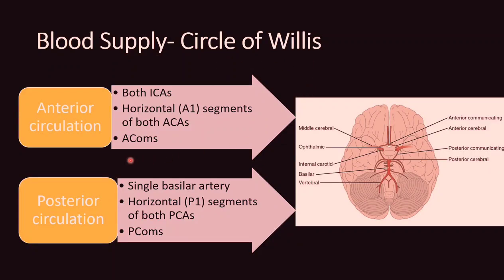The circle of Willis includes the anterior circulation and the posterior circulation. The anterior circulation is formed by both the internal carotid arteries, the horizontal segment of the anterior cerebral artery, and the anterior communicating artery. The posterior circulation includes both the vertebral arteries which join to form the single basilar artery, finally dividing into the posterior cerebral arteries. The anterior and posterior circulations are communicated via the posterior communicating artery.